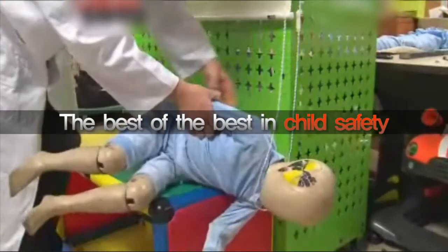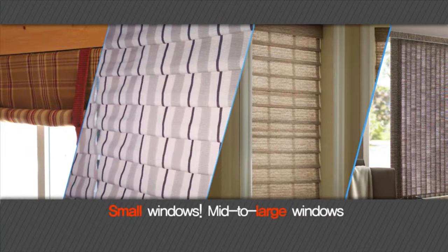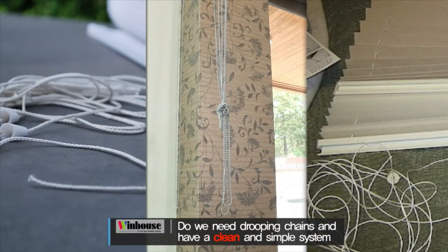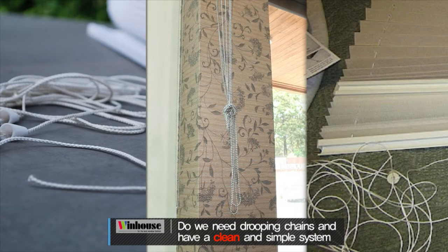The best on the market for child safety. Small windows, mid to large windows. Do we need drooping chains? Have a clean and simple system.